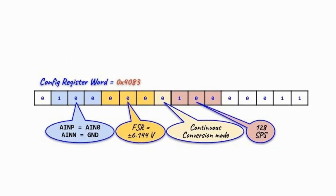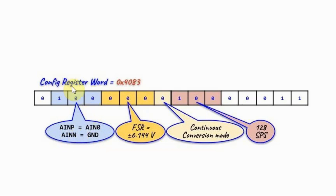In this video, the config register will be programmed to give 128 samples per second, continuous conversion mode, a full-scale range of ±6.144 volts, and the analog input will be single-ended analog input 0. The config register word is given by the value shown here.